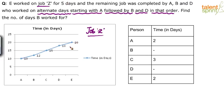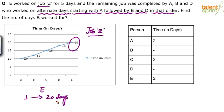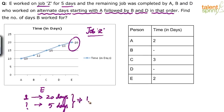E needs 20 days to finish the whole job. E can do 1/20 of the job per day. If E works for 5 days, E completes 5/20 = 1/4 of the job. So E has done 1/4 of the job.